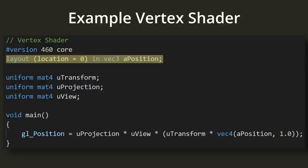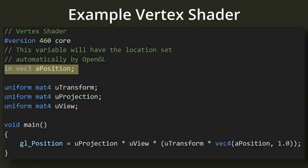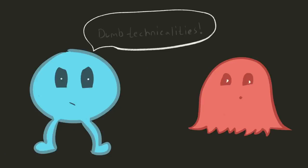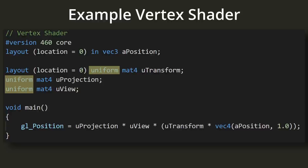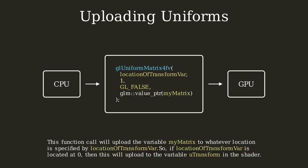The layout qualifier can be used to tell OpenGL several different things about a variable. Most of the time, you will use it to denote the location of the variable — the same location used when setting up vertex attributes on the CPU. You can also let OpenGL automatically determine the location, or you can specify a location manually for any variable, including uniforms. The uniform qualifier tells OpenGL that this variable will be coming from the CPU. On the CPU side, you can upload a variable of this type to the GPU using one of the many glUniform functions.